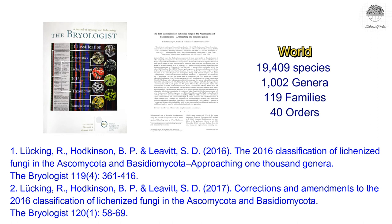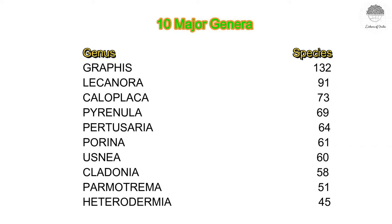For the diversity of lichens in the world, according to the latest publication by Lücking et al. 2017, published in The Biologist regarding the classification of lichens, there are 19,419 species in the world within 1200 genera, 119 families, and 40 orders. This is the diversity of lichens globally.